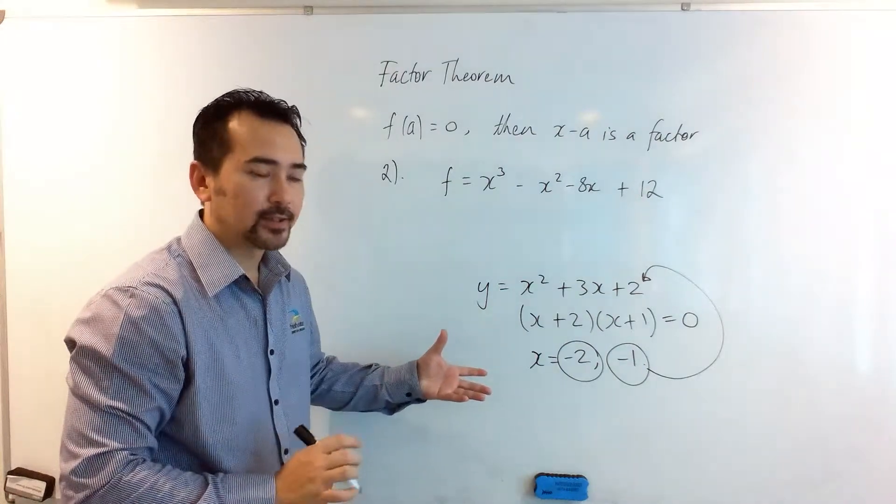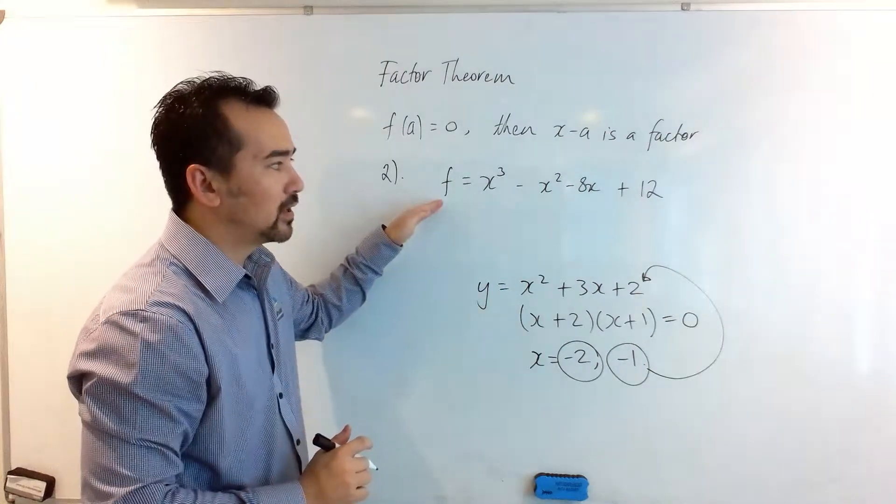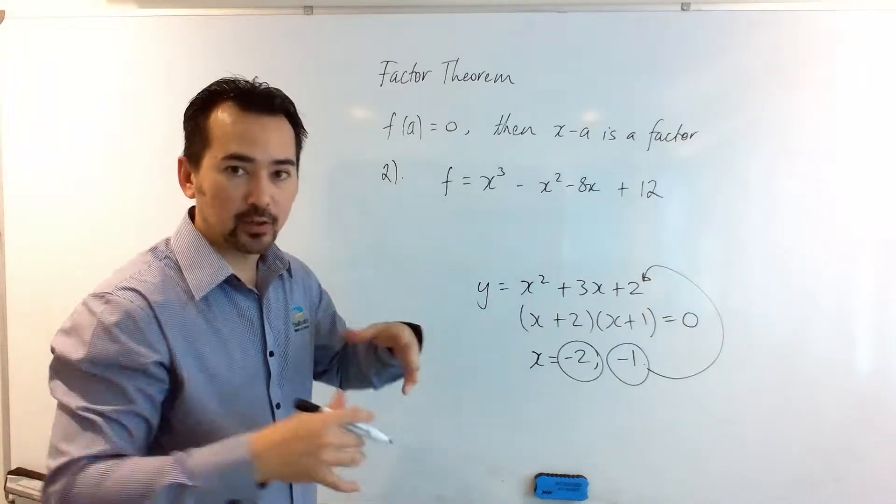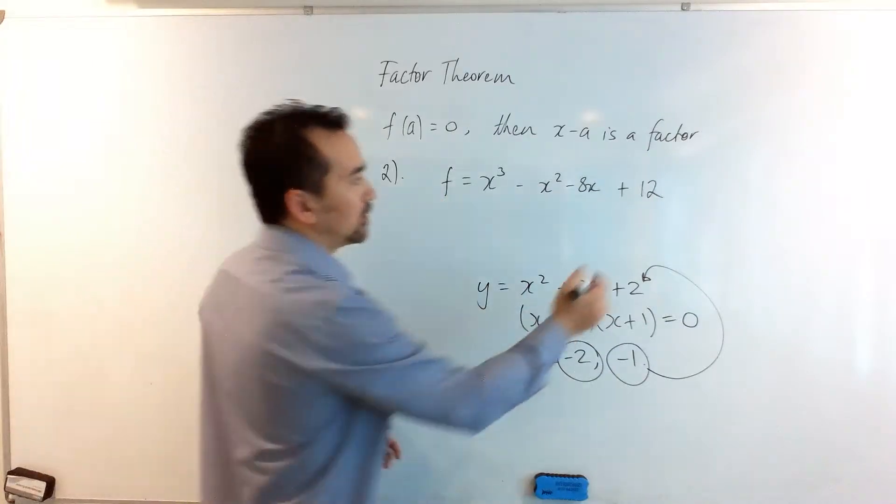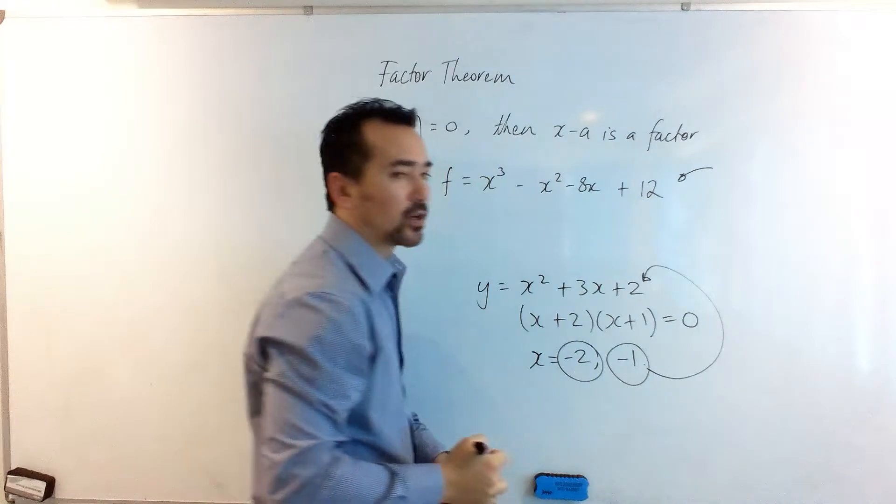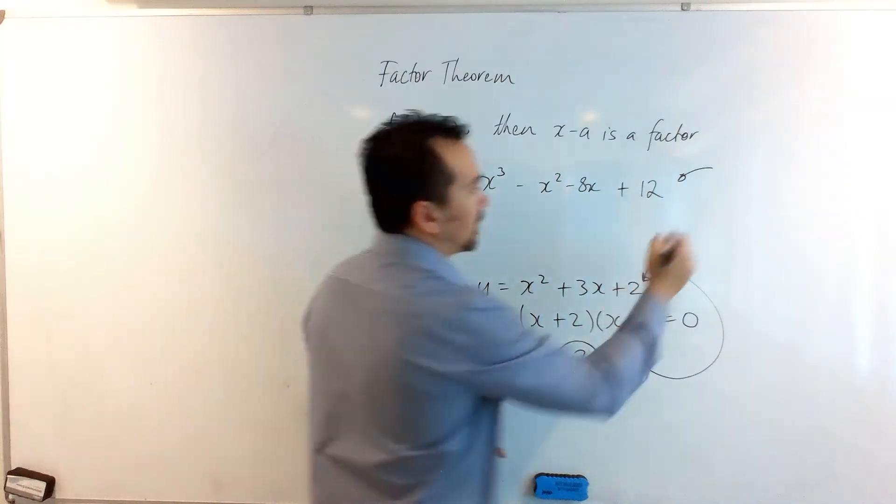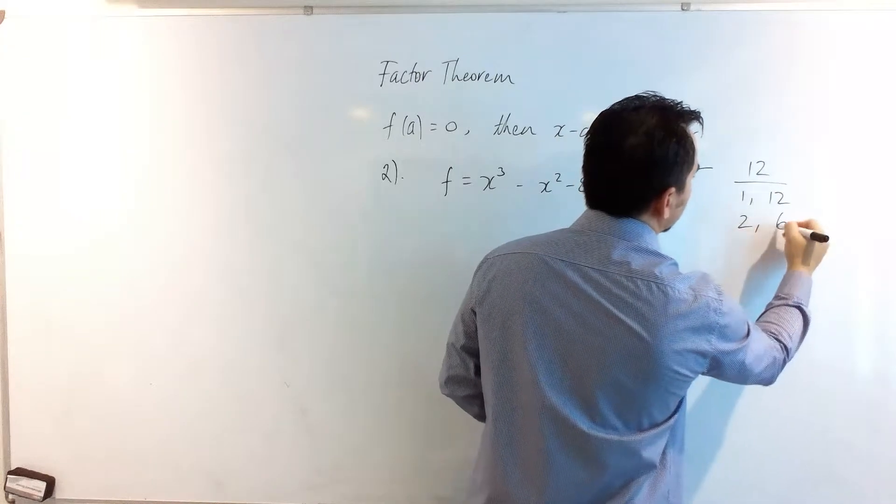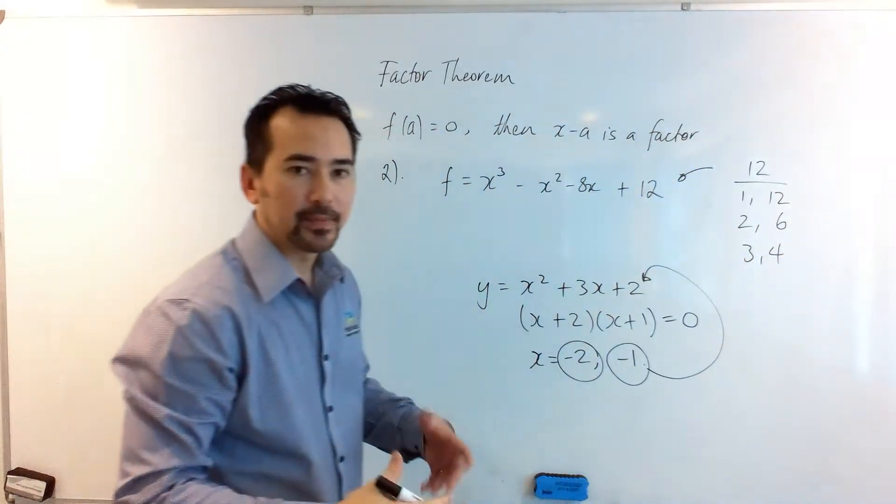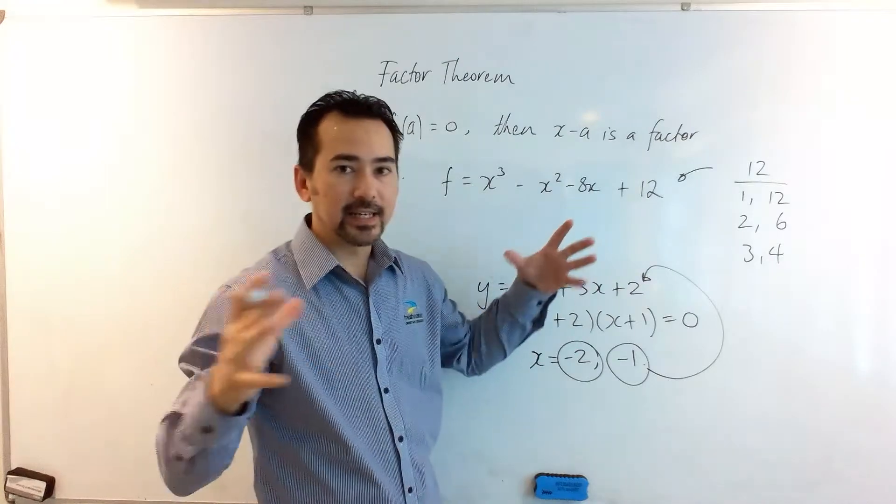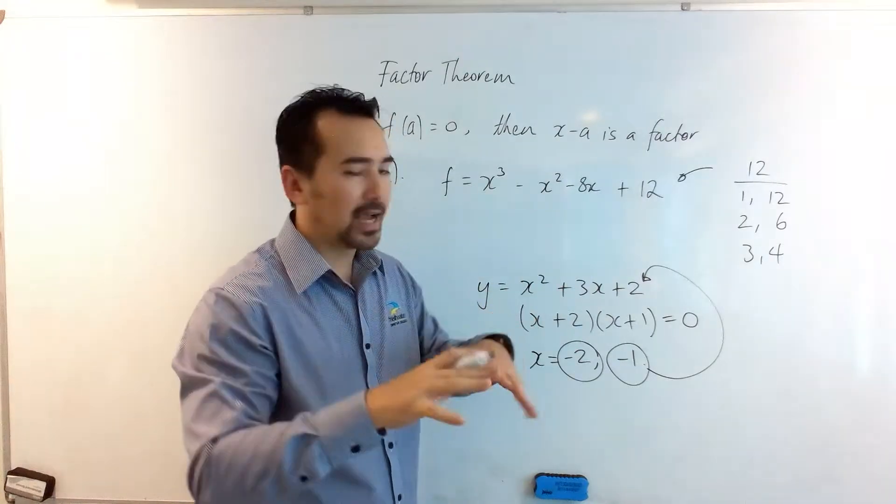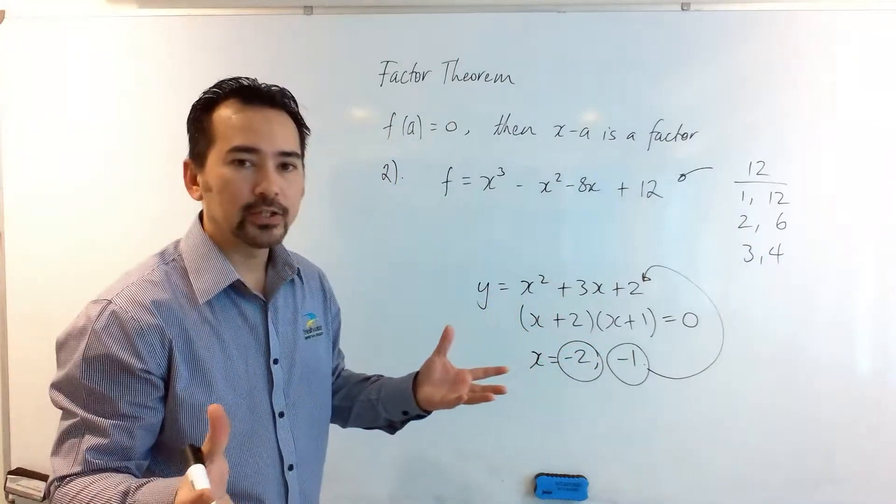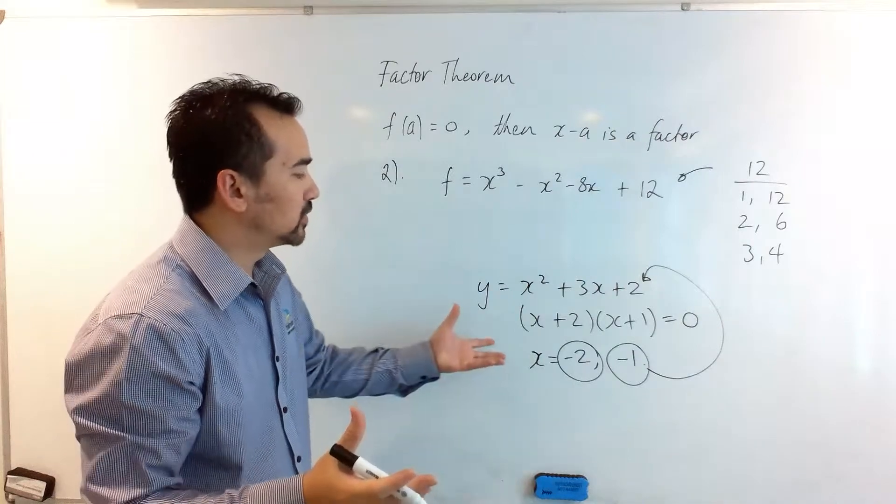We can use this to help us find factors for this cubic function—in fact, all polynomials. So let's have a look at the constant 12, and the factors of 12 are 1 and 12, 2 and 6, 3 and 4. This seriously narrows down our range of roots to try and test for.